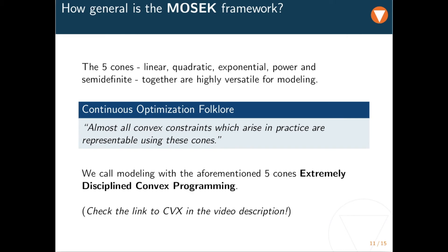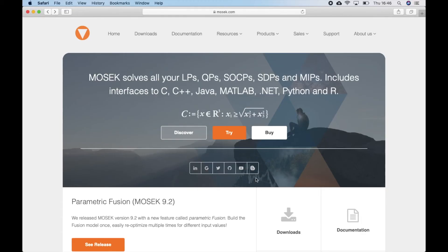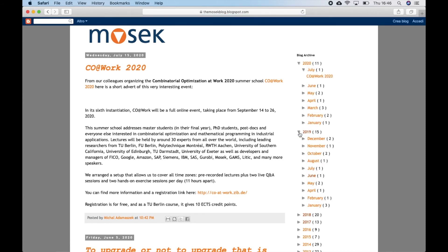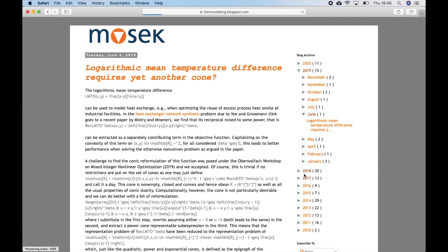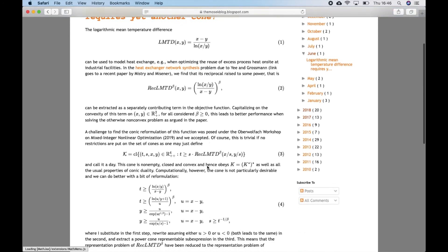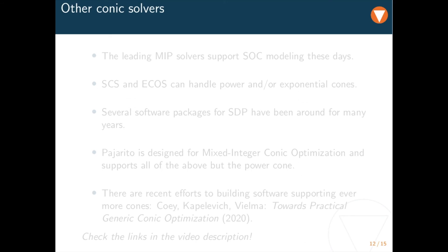There is of course no formal proof of the validity of the folkloristic conjecture. About two years ago we were not aware of any counterexamples and posed the challenge of finding convex constraints that do not have an extremely disciplined reformulation to users. There are some counterexamples by now though. If you are interested in the topic, check out this blog post from June 2019.